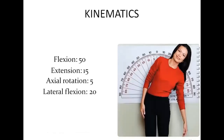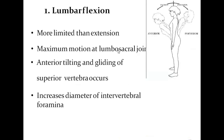Coming to the individual motion of the lumbar spine, sacrum, and pelvis: when you talk about kinematic or motion analysis, the spinal column grossly has flexion, extension, axial rotation to the right and to the left, and lateral flexions to the right and to the left — six movements in total. Talking about the kinematics of lumbar flexion: lumbar flexion is more limited than extension. The maximum motion occurs at the lumbosacral joint.